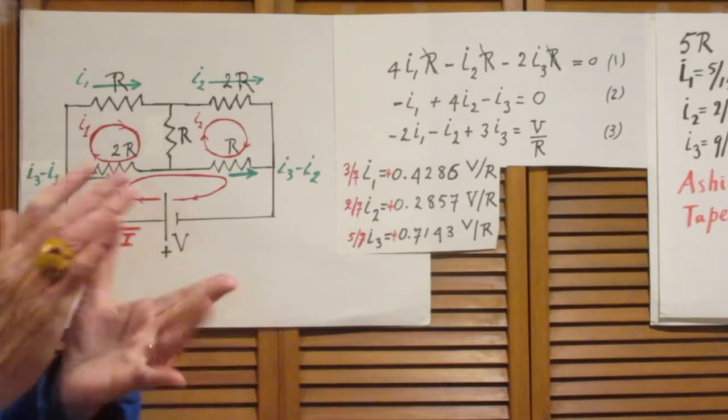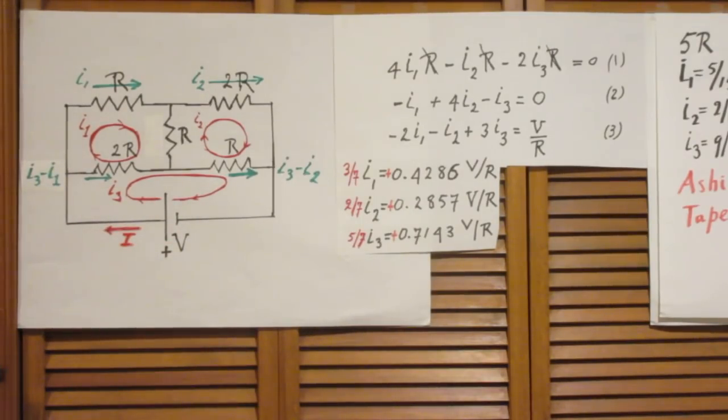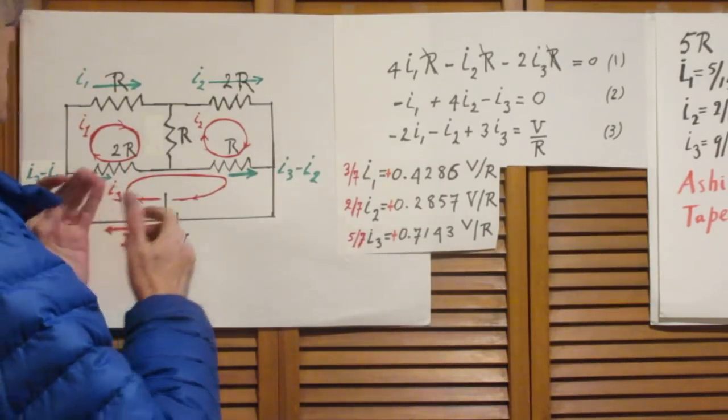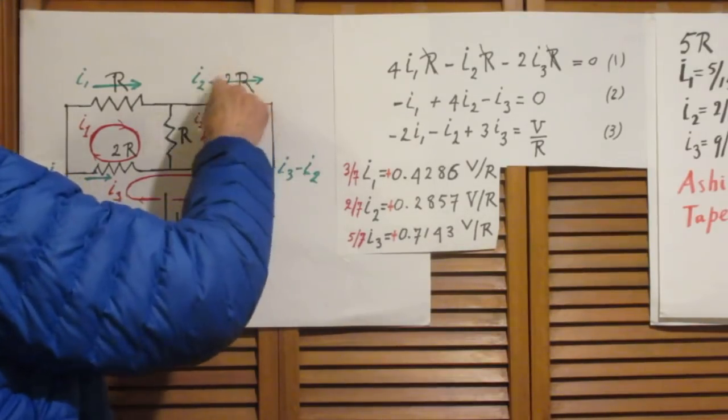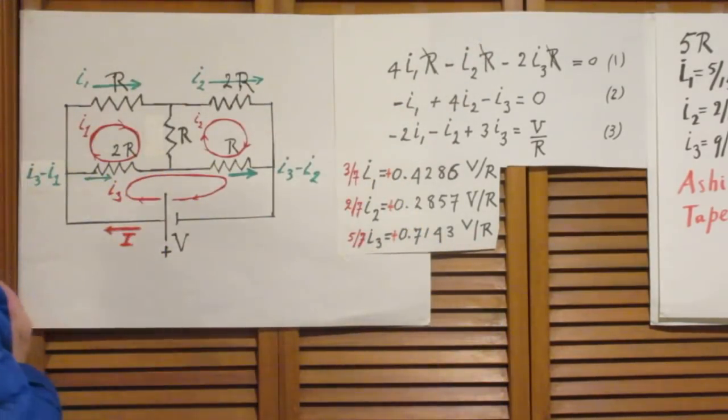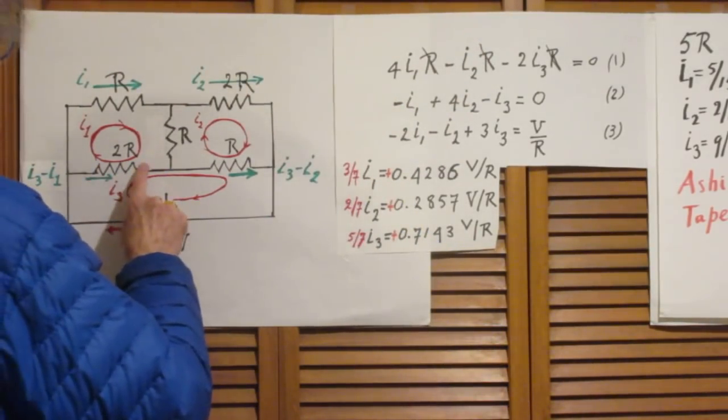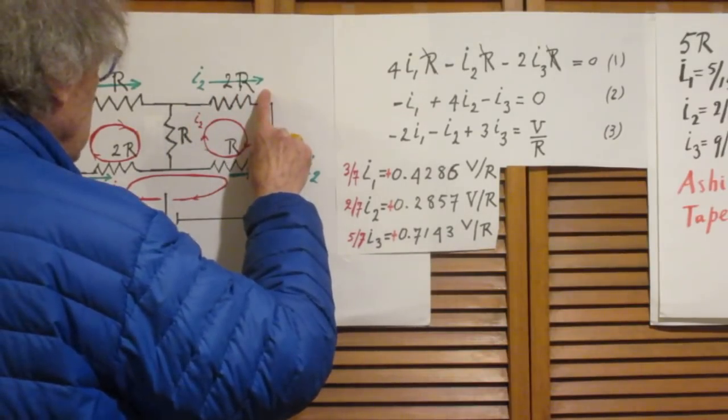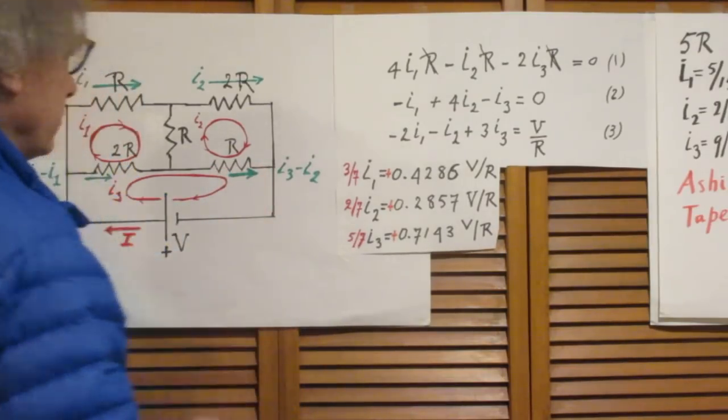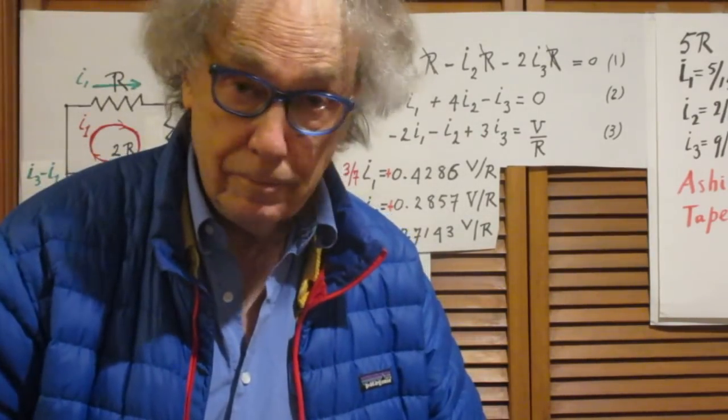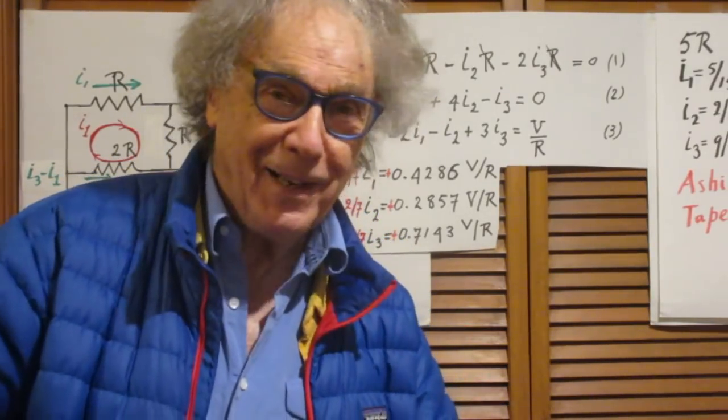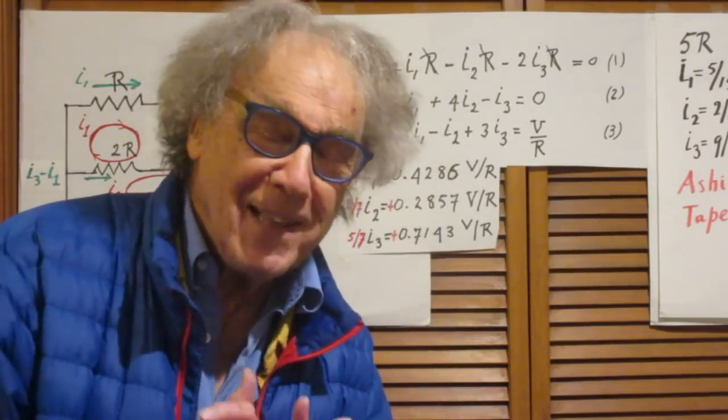So far so good. I then made a statement a little later in my solutions that even if you change this value 2R to any other value, that you would still find that the current through here would be the same as the current through there. And that is not true.